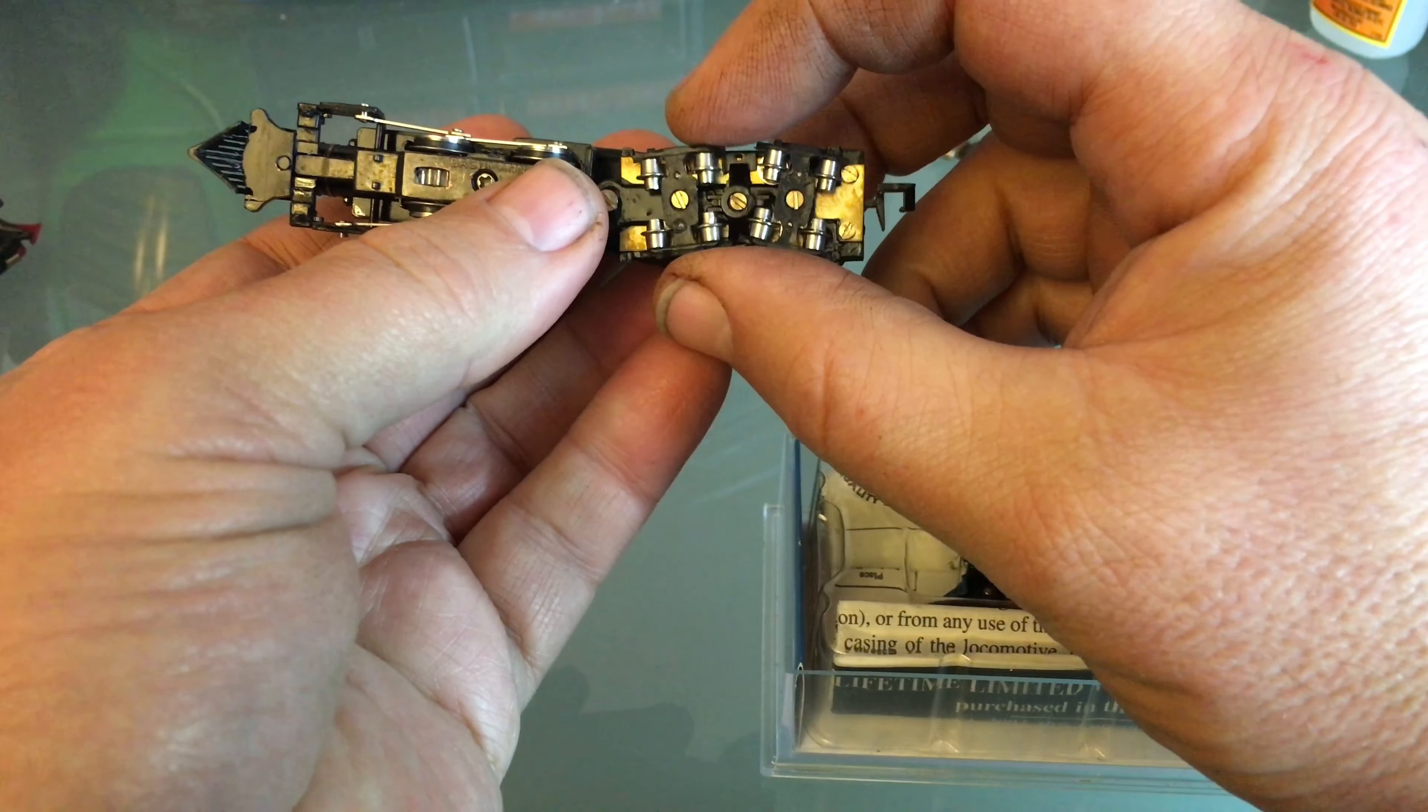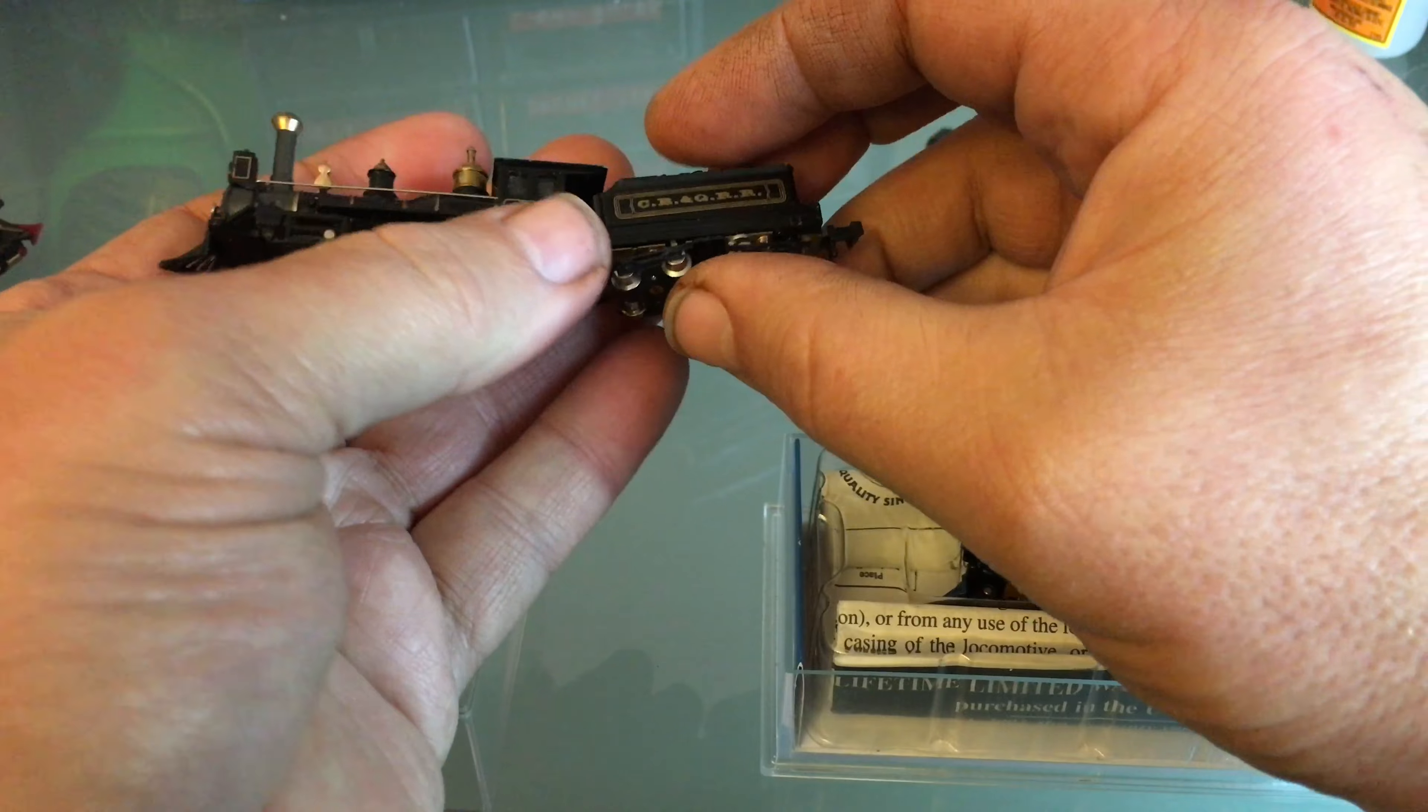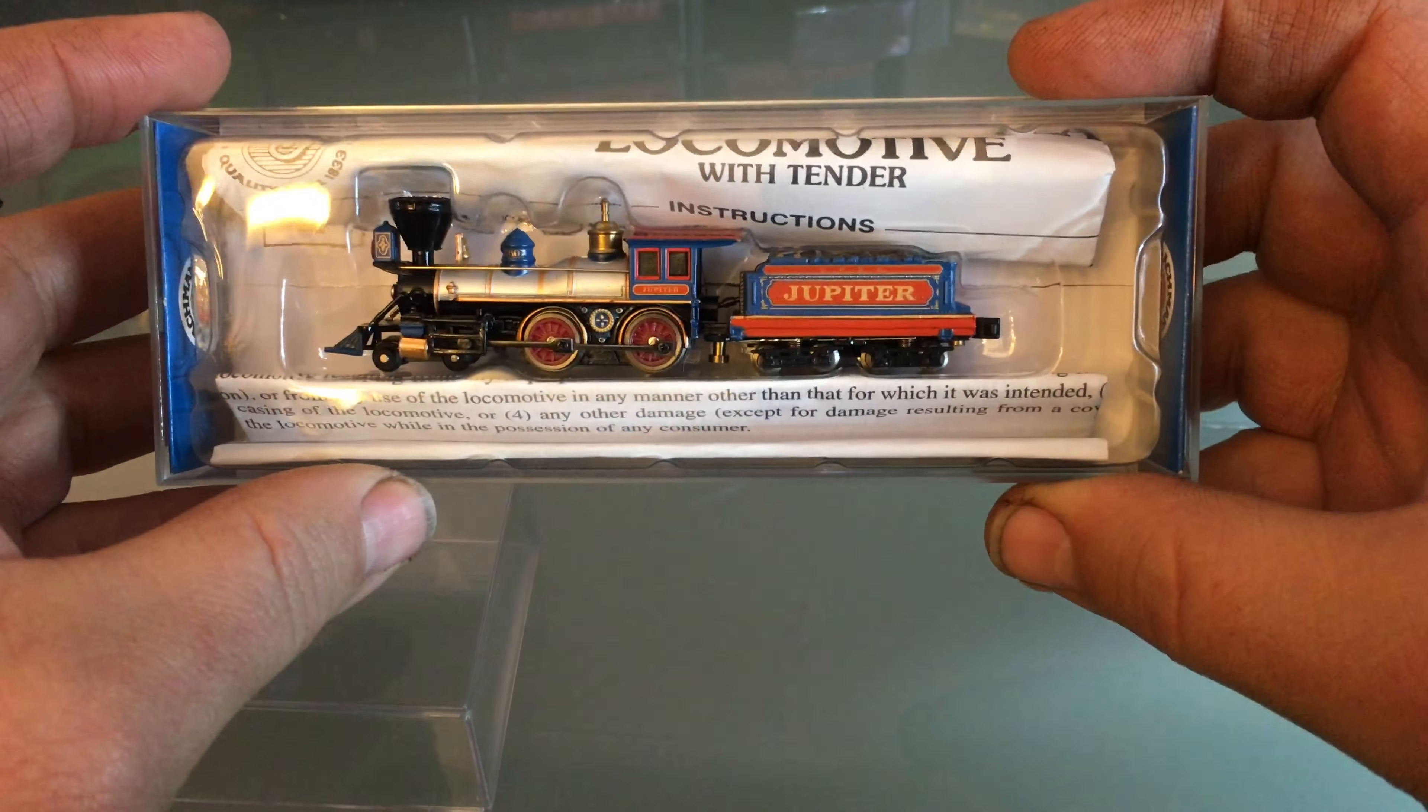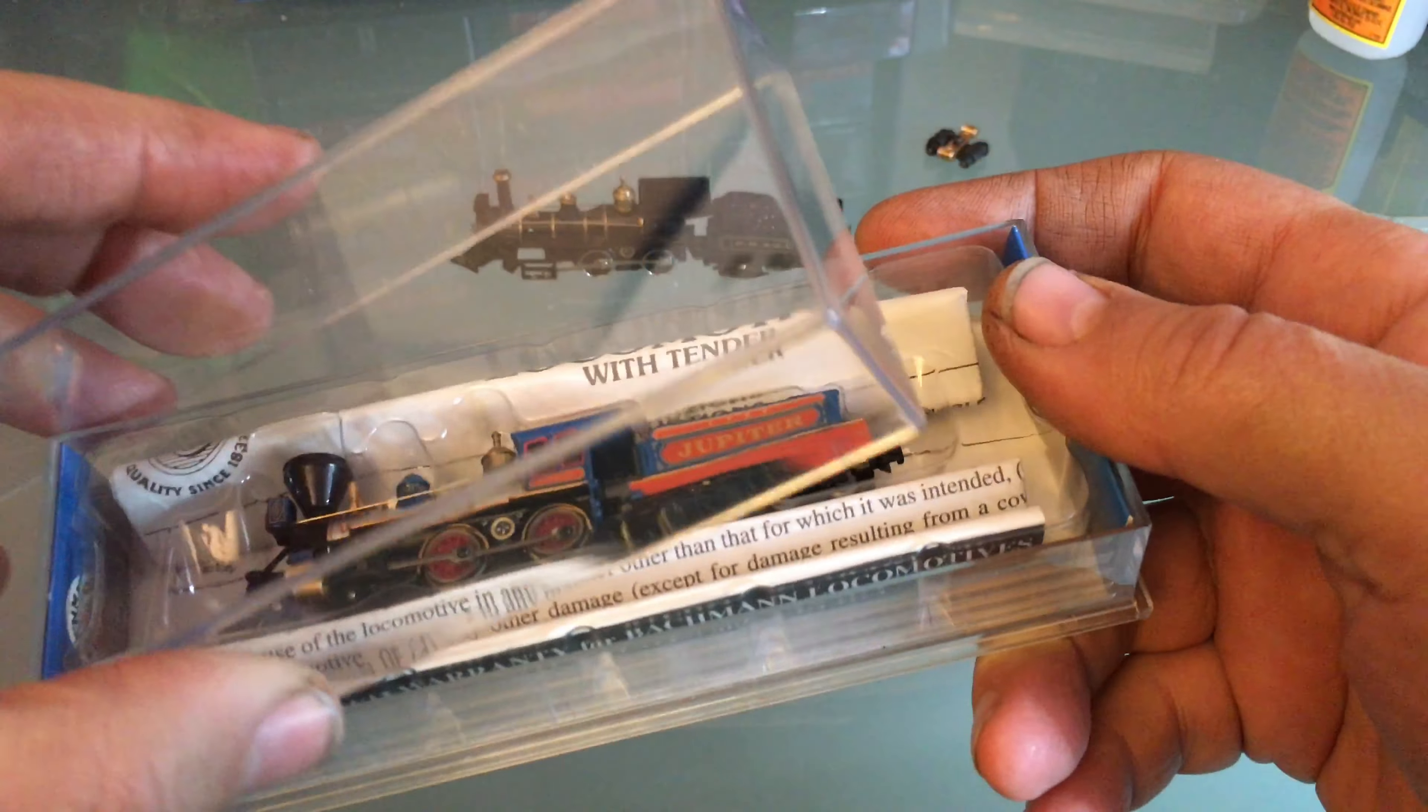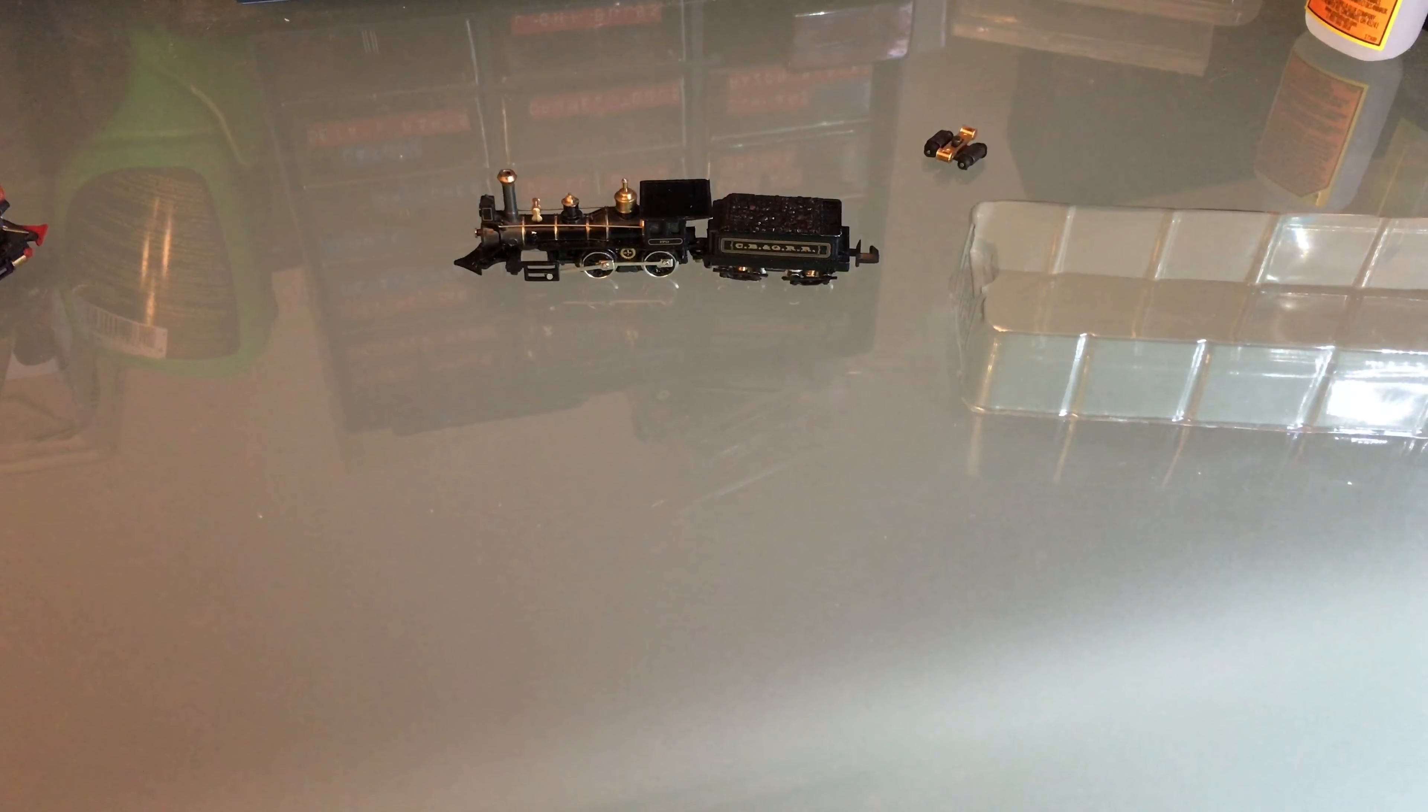It's got still a Rapido coupler. These pick up electricity 100% from the tender. There's nothing electrical on the front part. So this one does have a knuckle coupler and it's a small drive shaft and the box is blue. And they do try to improve them over the years.